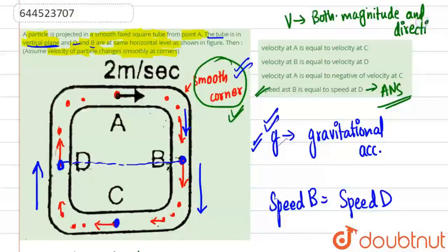Because velocity has both magnitude and direction, we cannot say that velocity is constant because everywhere direction and speed are changing. So basically our answer will be only option number D. Got it?